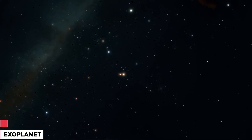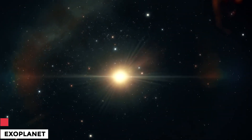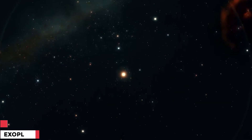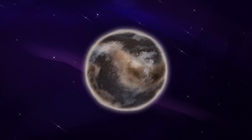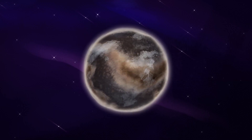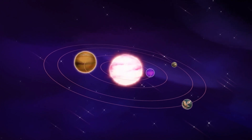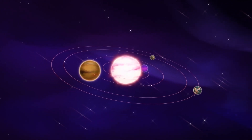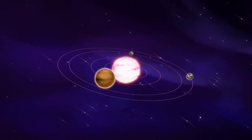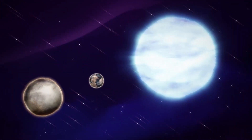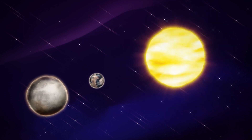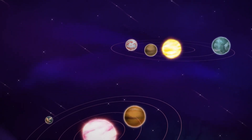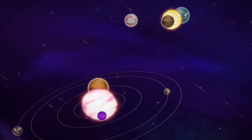Exoplanets. Exoplanets, or extrasolar planets, are planets that orbit stars other than our Sun. They open up new avenues for exploration and discovery, as we can now observe a diverse range of planetary systems beyond our own solar system. By studying exoplanets, astronomers can better understand planetary formation and evolution and compare the characteristics of different kinds of planets.